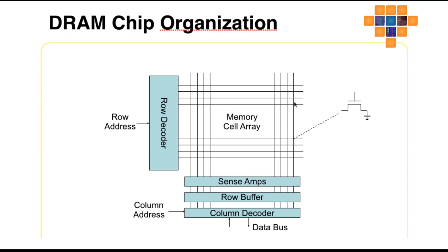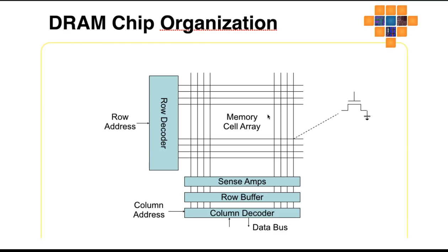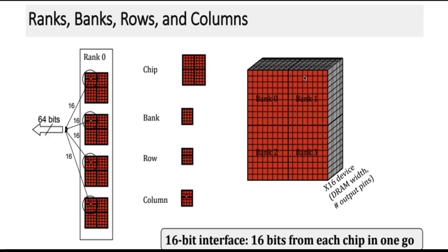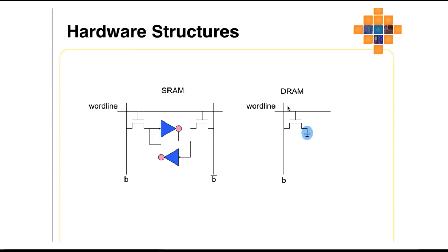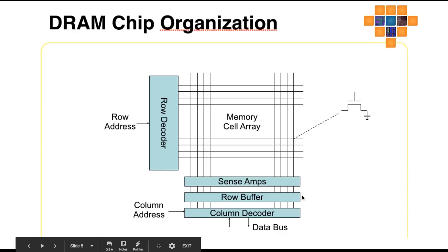When you zoom into the chip you can find several banks. A bank has an array of rows and columns which is the DRAM — it has a memory cell array with rows and columns. The DRAM is organized with a row decoder that decodes the row address sent by the control bus, a sense amplifier and row buffer, a column decoder that decodes the column address, and a data buffer.